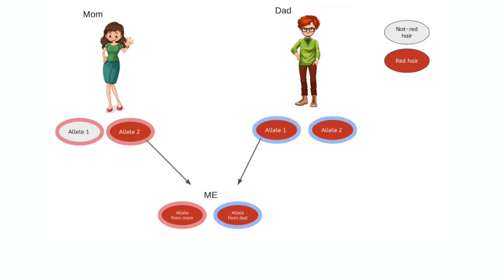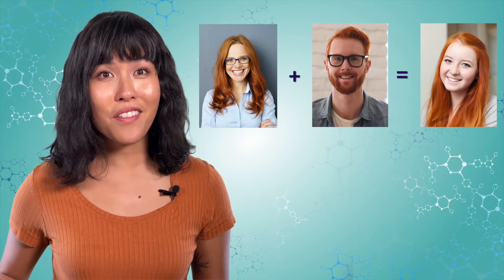In this example, mom has one allele for red and one for not red. Dad has two red hair alleles. You could only have received a red hair allele from dad, but from mom it was a 50-50 shot. And you happen to get the red allele from her as well, so you now have two identical red alleles. If the allele you get from mom is for red hair and the allele you get from dad is for red hair, what color hair would you have? It's pretty obvious here that you would have red hair.